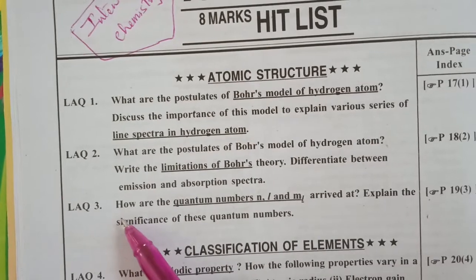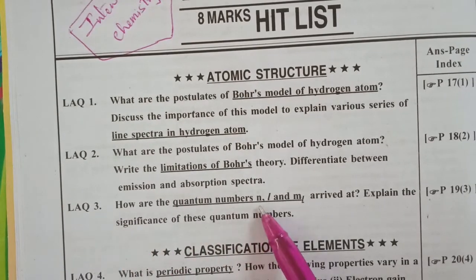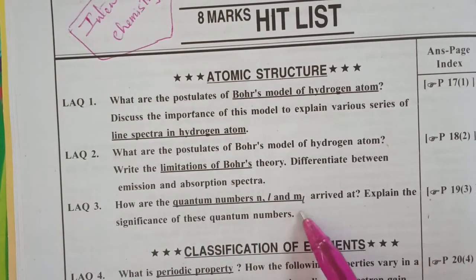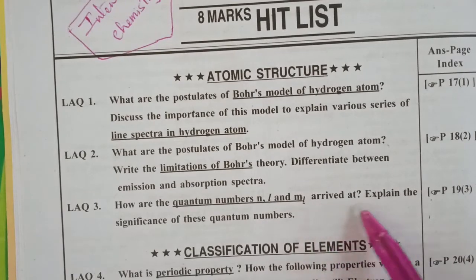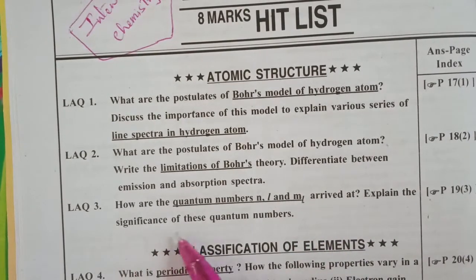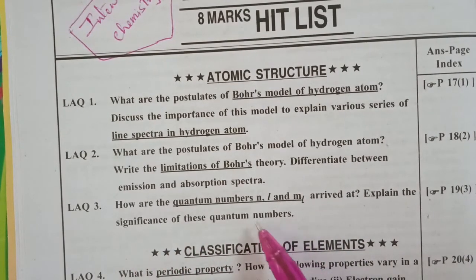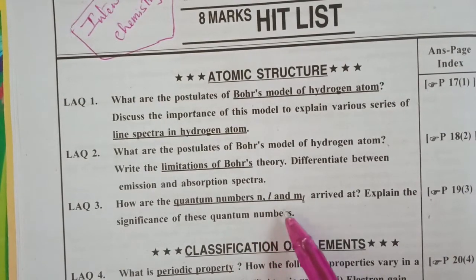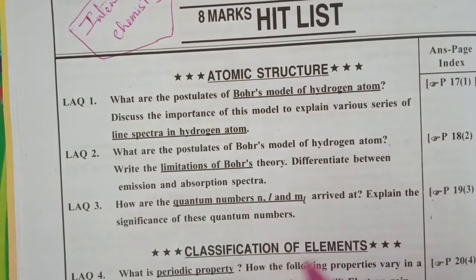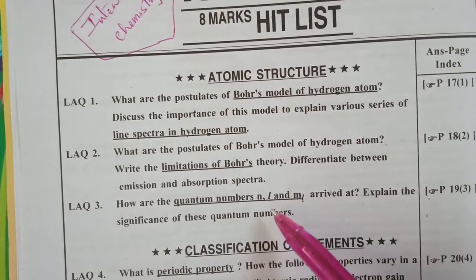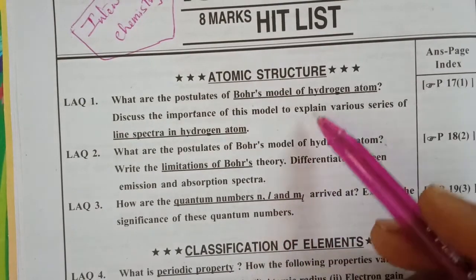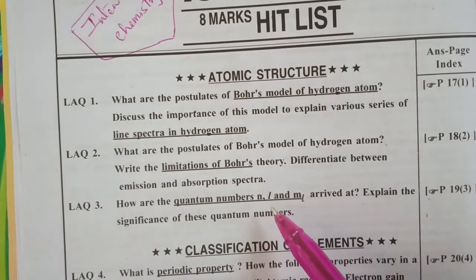And third question, how are the quantum numbers n, l, and m_l arrived at? Explain the significance of these quantum numbers. What are the explanations? Significance are the ones that we use. So this is also very important and repeated, most repeated and important questions.